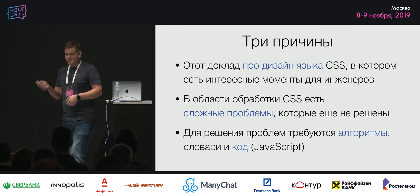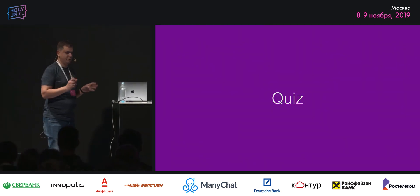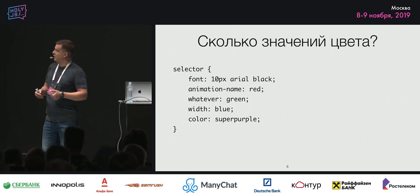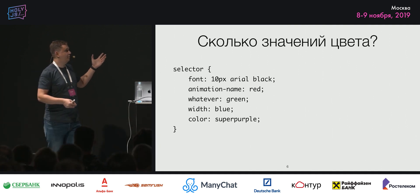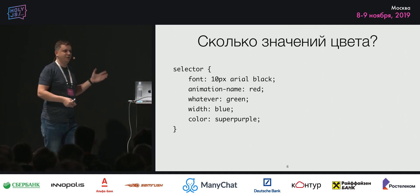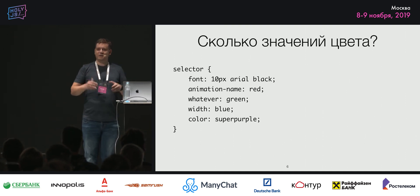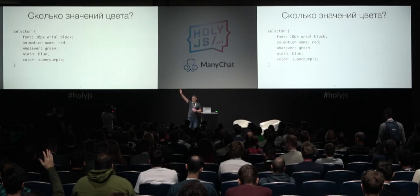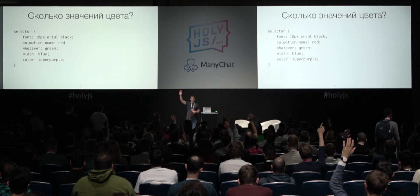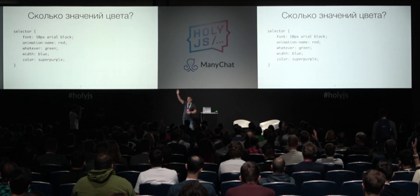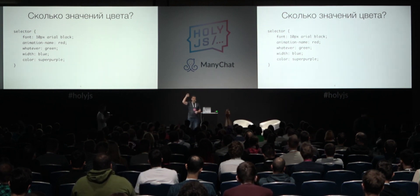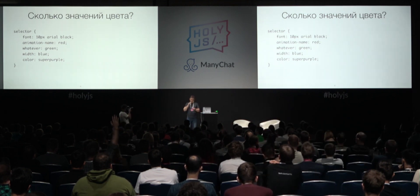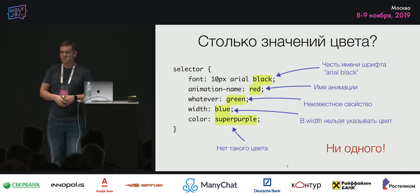Давайте разомнёмся — небольшой квиз. Вот есть CSS, и здесь какие-то значения цвета вроде бы. Сколько здесь правильных значений цвета, по вашему мнению? Давайте по убыванию: кто видит пять? Кто видит четыре? Три? Два? Одно? А на самом деле — здесь нет ни одного валидного значения цвета.